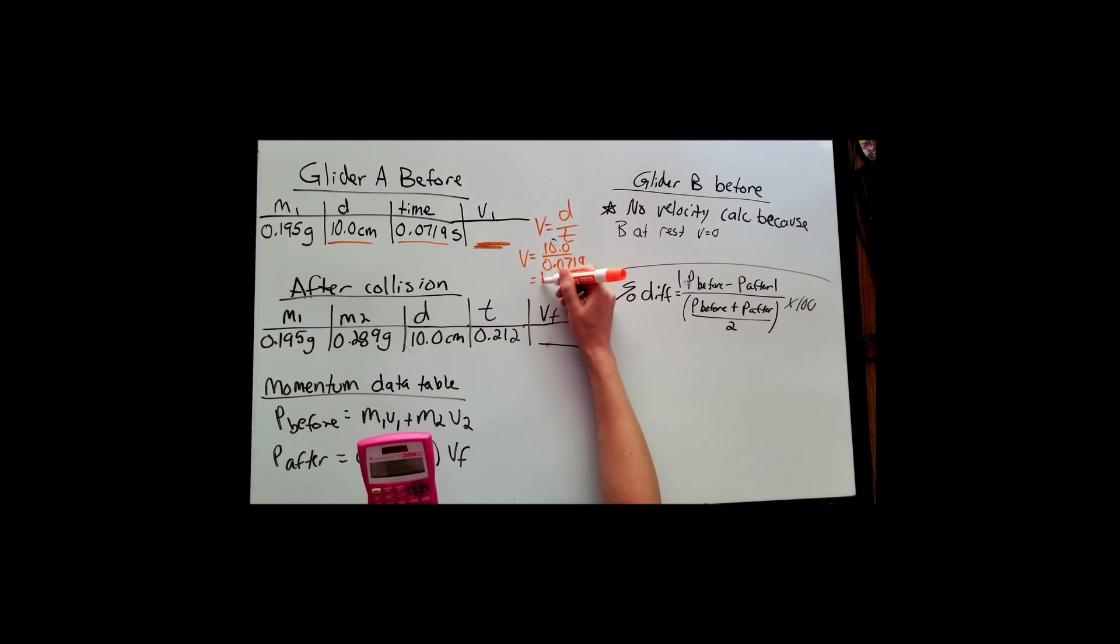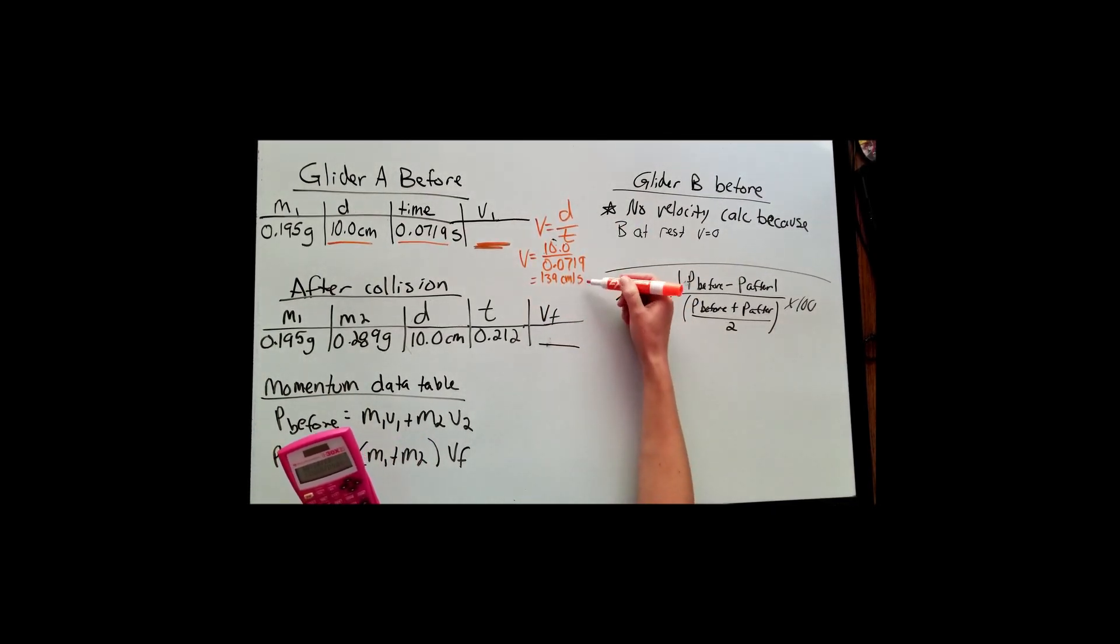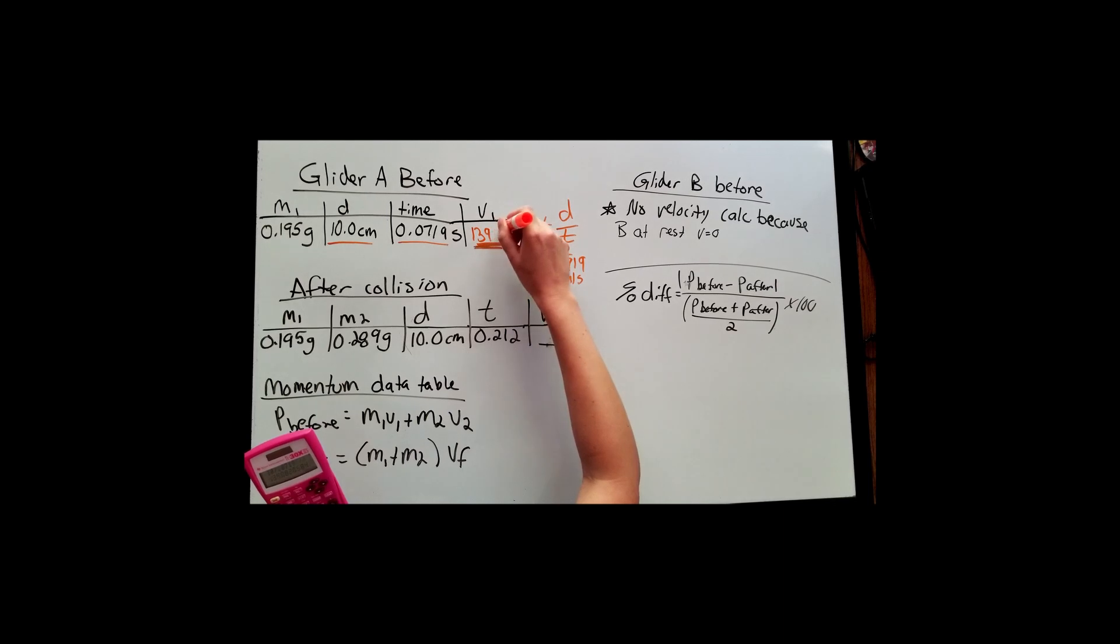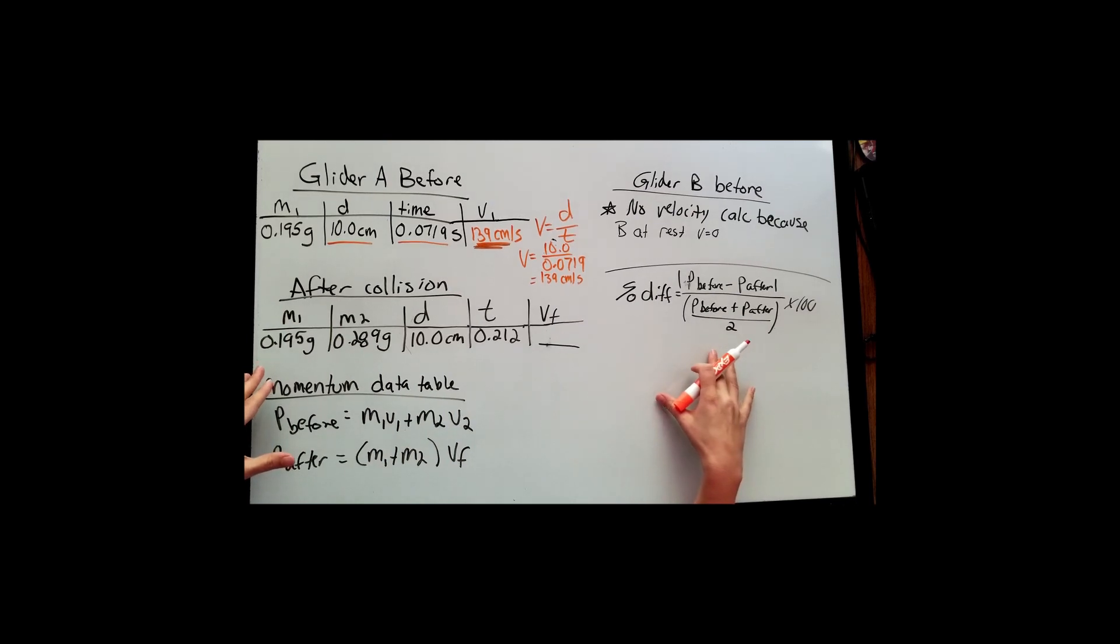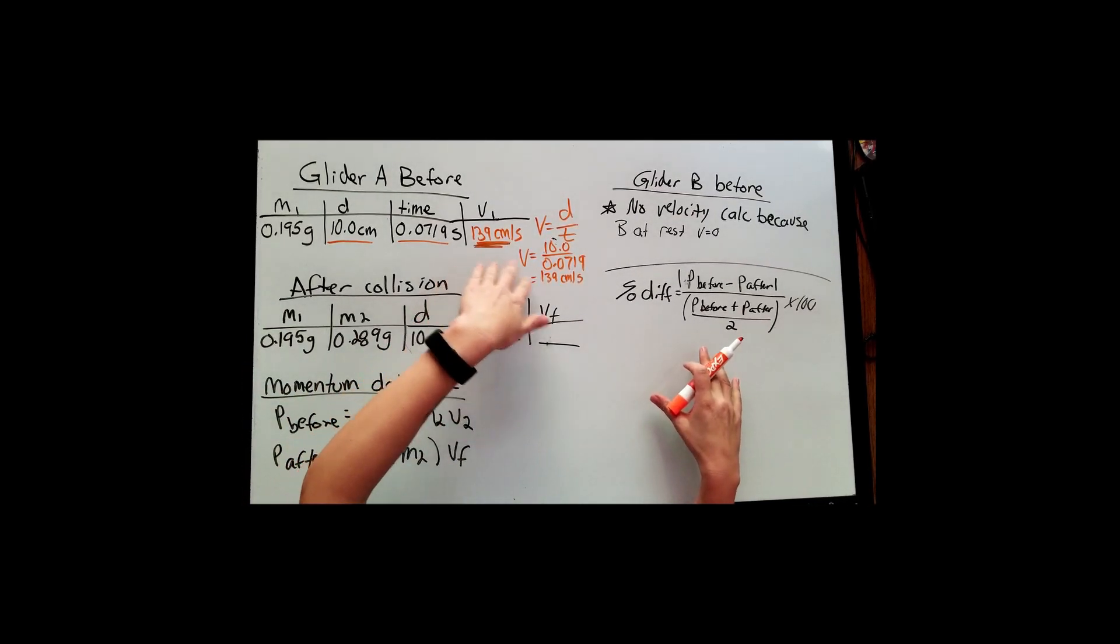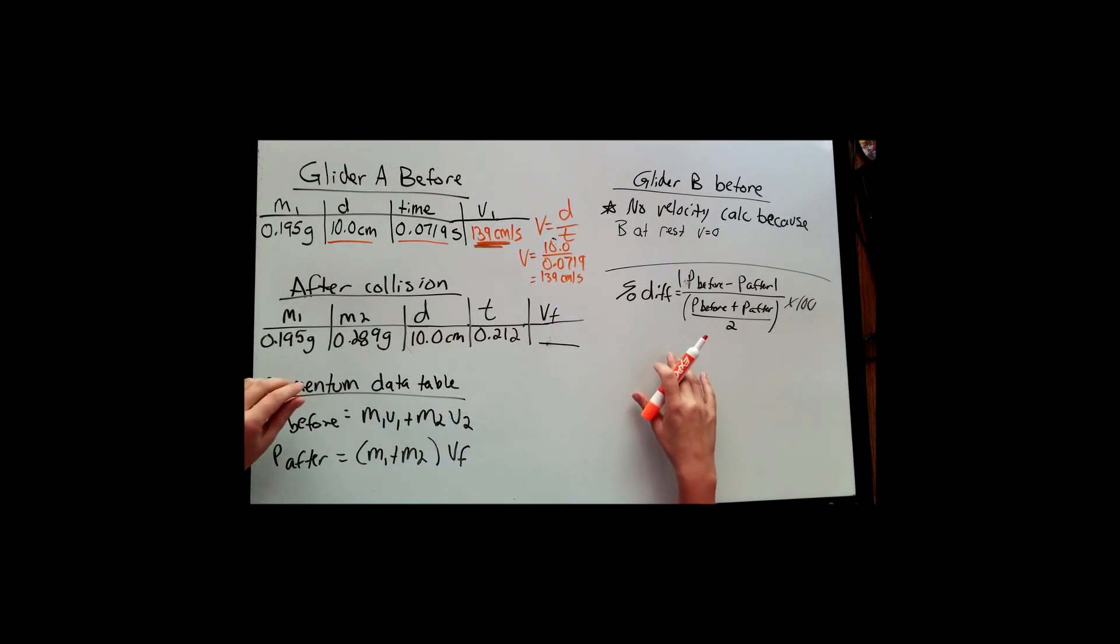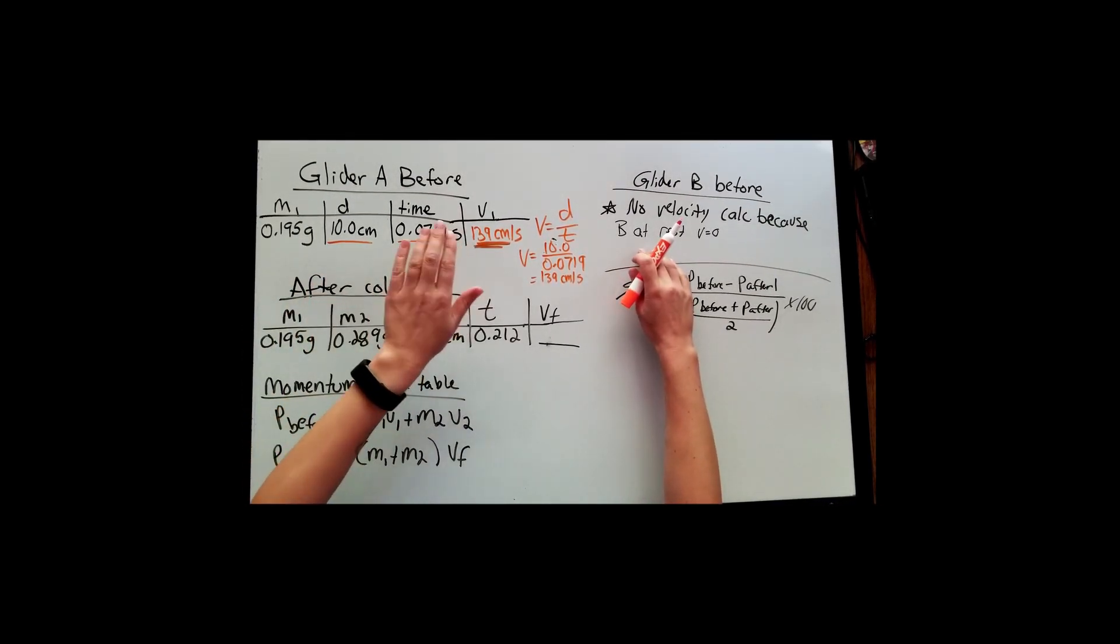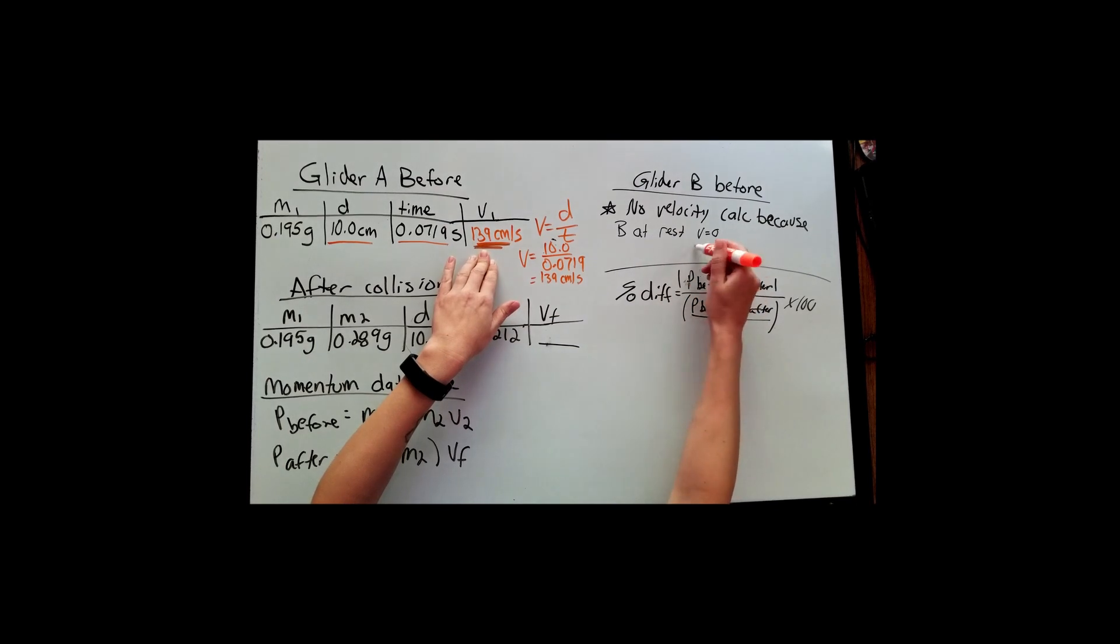If you plug that into your calculator, you should get the velocity of glider A before it collided with glider B, who is just sitting in the middle of the track motionless. So I get 139, and the units are centimeters per second. You're going to want to show this calculation because there is a spot to show calculations. You get points just for showing the calculation, but also make sure that you are filling in the table. Now there are two trials, so I am working through the first trial for you, but you still need to fill in those blanks. And then trial two, you'll be on your own solving for that one. So this is all before. The glider A was going 139 centimeters per second before it collided with glider B, who was initially at rest.